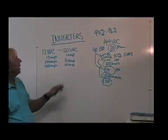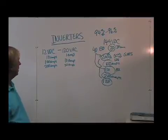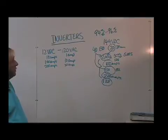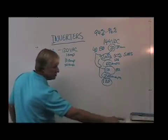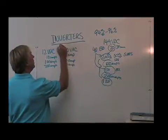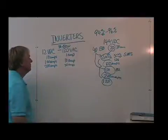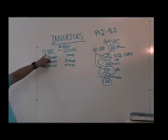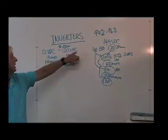If we look at an inverter rated at, let's say a 3-kilowatt inverter, or let's use as a prime example, a 3.5-kilowatt inverter that's running off of 12 volts DC to make 120 volts AC.